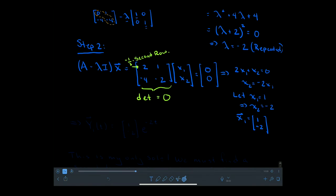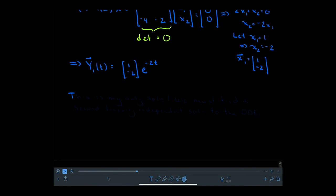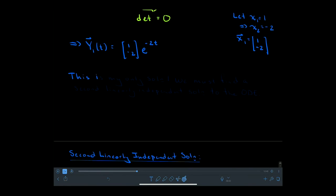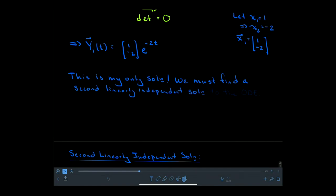From the eigenvalue-eigenvector calculation, we have found one solution: y₁(t) = [1, -2]e^(-2t). This is our only solution so far, and we must find a second linearly independent solution to the ODE.